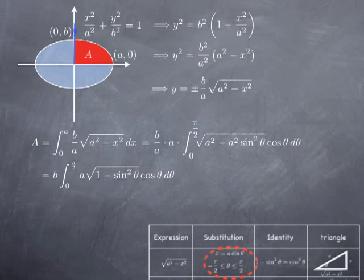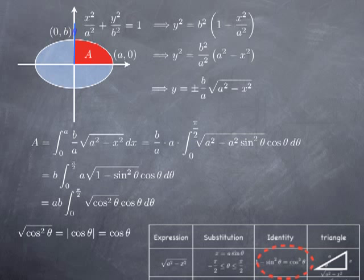Canceling the factor a in front of the integral, we get just b. Inside the square root, factoring out a² gives a²·(1 minus sin²θ), and pulling a out of the root leaves a. Using the identity 1 minus sin²θ = cos²θ, we get sqrt(cos²θ) = |cos θ|. Since θ is restricted to [0, π/2], cosine is positive, so this simplifies to just cos(θ). We then have ab in front of the integral from 0 to π/2 of cos²θ.